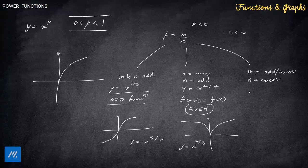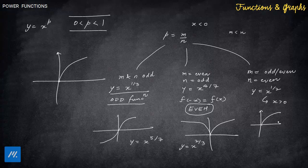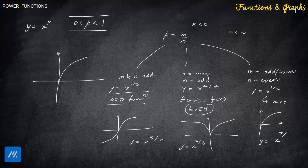The third sub-case for 0<p<1 is when n is even, regardless of m. Take y = x^(1/2) — the square root function. Its domain is x ≥ 0, so the graph only exists on the right side. Similarly, x^(7/10) with an even denominator 10 would have the same restriction. You cannot draw anything on the left-hand side; the answer is only the right side.